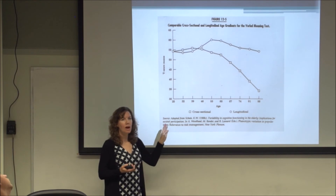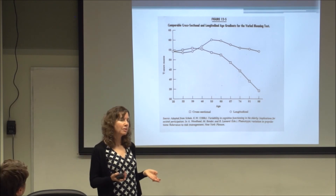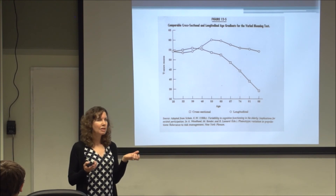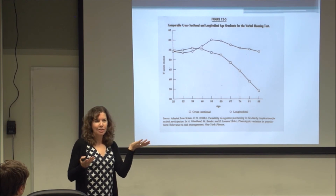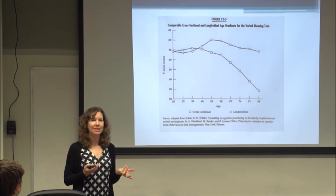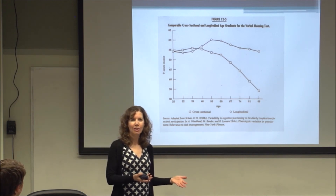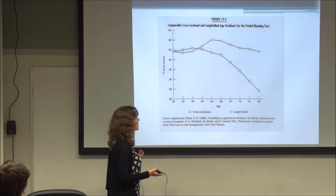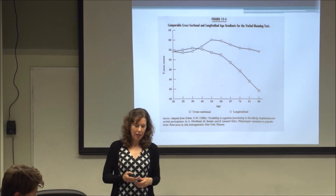Cohort effects can also work in the opposite direction. The Boston Naming Test looks at word-finding problems, and some of the pictures are things like a yoke or an abacus. Older adults would be very familiar with those items, but younger generations may not have that familiarity. These are important things to take into account when you're trying to look at differences between different age groups.